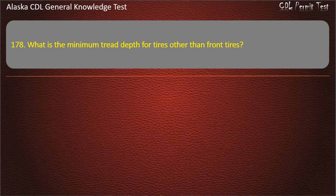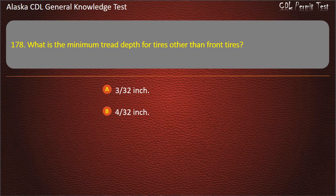Question 178. What is the minimum tread depth for tires other than front tires? 3/32 inch, 4/32 inch, or 2/32 inch. Answer: 2/32 inch.